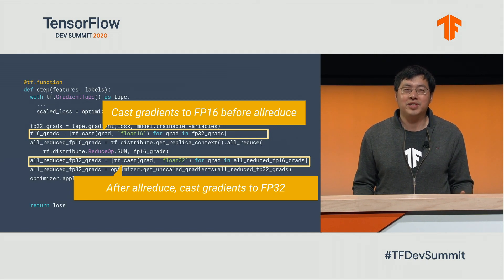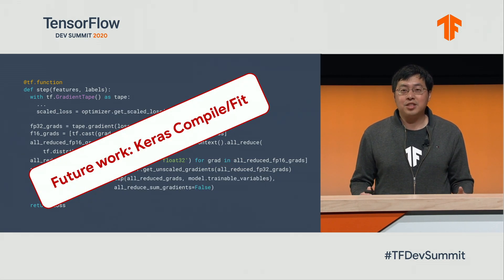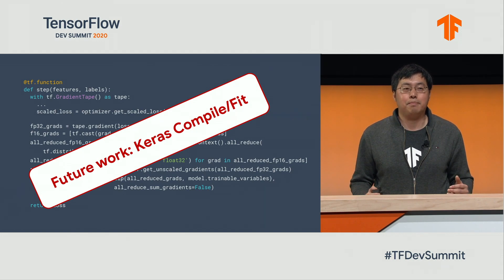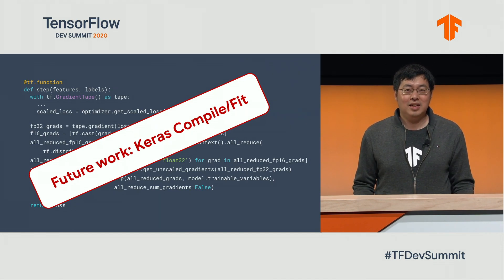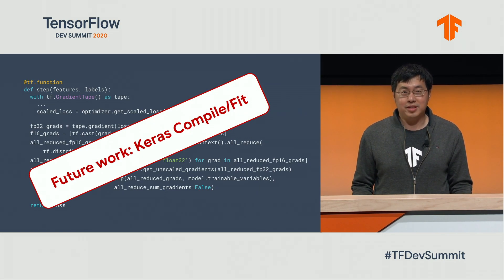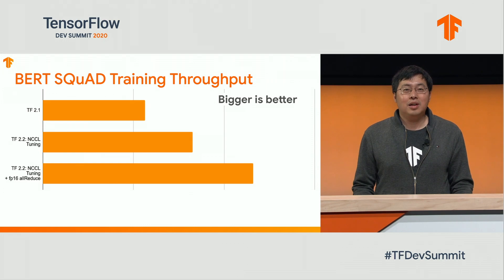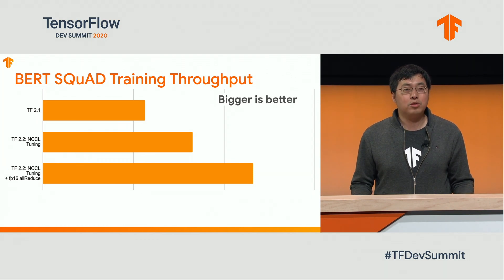I want to make one more point. For advanced users who want to customize gradient operations including AllReduce in float16, they can use the custom training loop for maximum flexibility. But for average users who just want AllReduce in float16 out of the box, we are working on supporting this in Keras Compile and Fit in future releases. With float16 AllReduce, we are seeing BERT SQuAD training throughput further increased by about 35%. We are now at almost 2.2x throughput compared with TensorFlow 2.1.